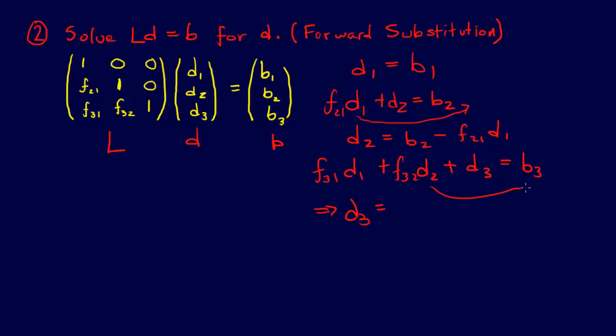D3 equals, we'll just bring these two to the other side of the equation. So D3 equals B3 minus F31 D1 minus F32 D2.